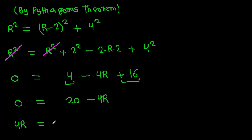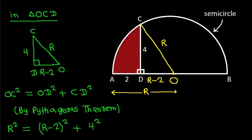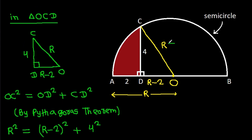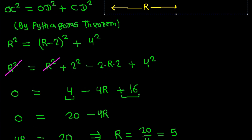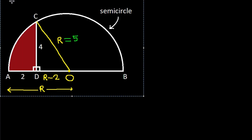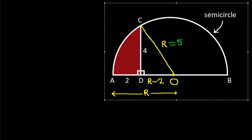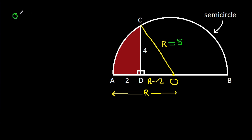Therefore 4R equals 20, and R equals 20 over 4, which is 5. Now OD is R minus 2, so OD equals 5 minus 2, which equals 3.